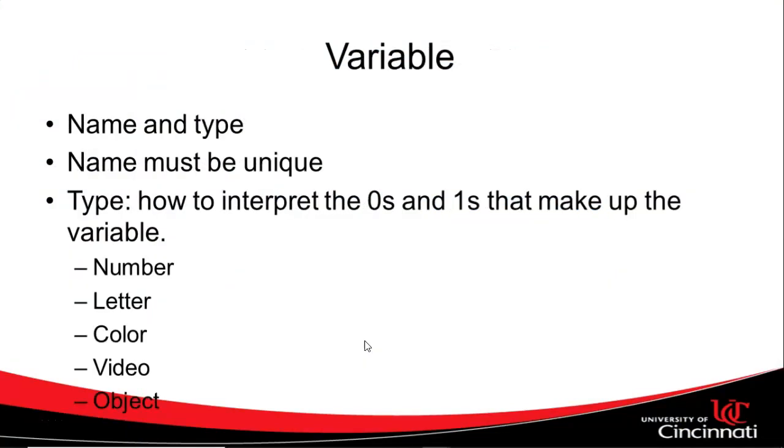Also variable. Variable is another programming concept that we're going to have. Variable requires a name and a type. The name has to be unique. Name can't have spaces and most symbols we also can't have in a name. So all one word. It can be multiple words, just no spaces.